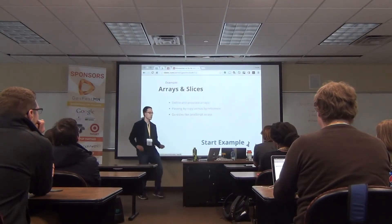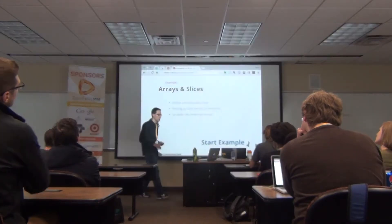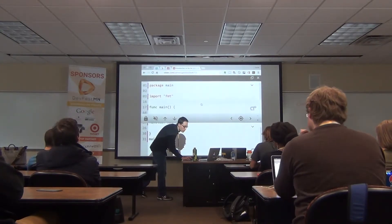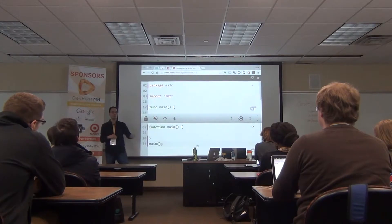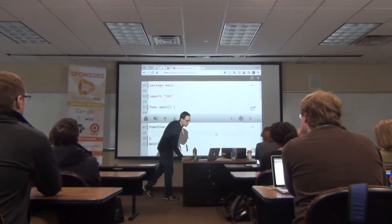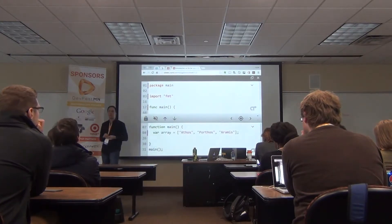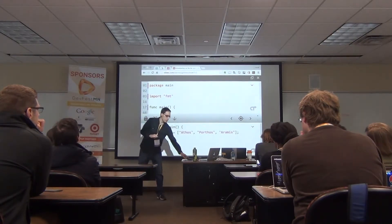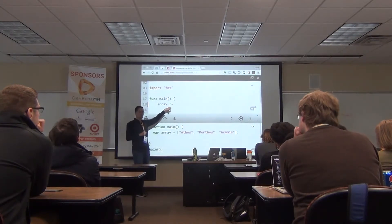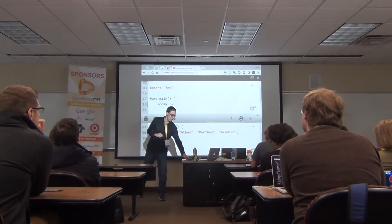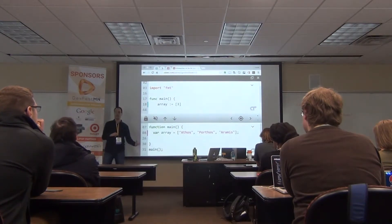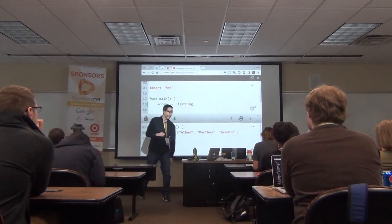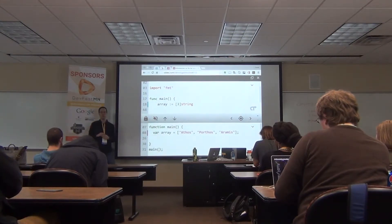Now we move to more complex data types — arrays. I create an array in JavaScript with three names. In Go I have to specify the length — if it's going to be three elements I have to tell the compiler — and also what type of elements will be in that array. So it's '[3]string' followed by the initialized values. Arrays in Go must have a specific size and all elements must be of the same type.